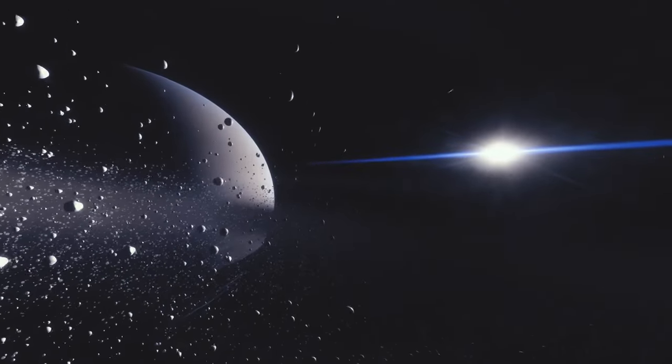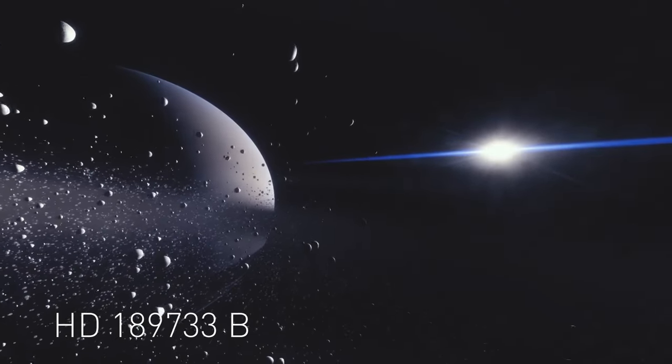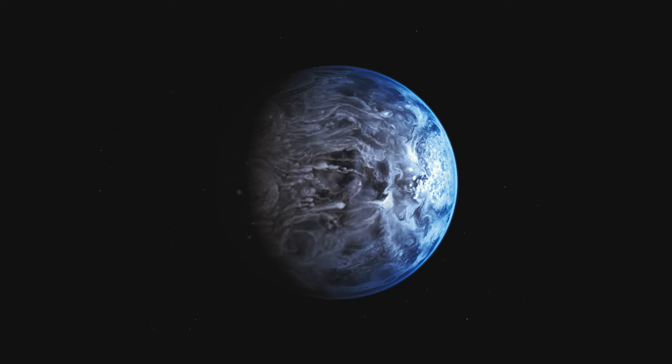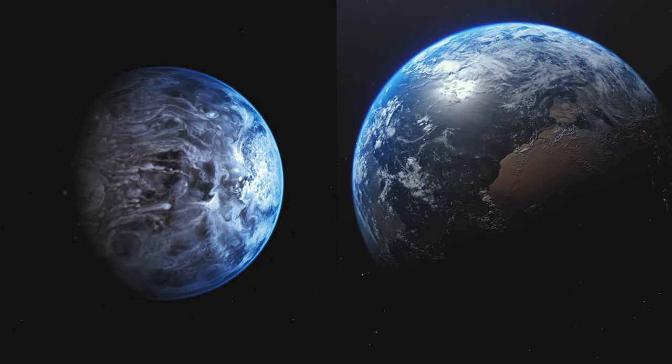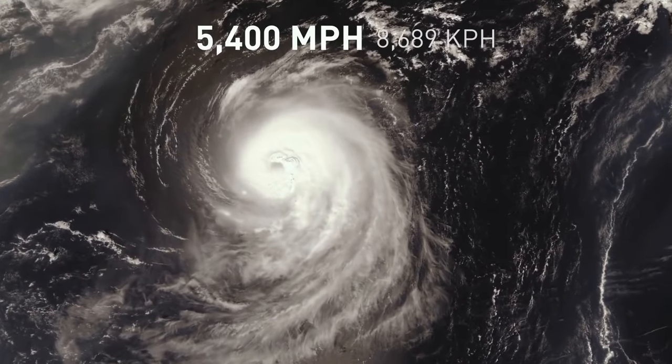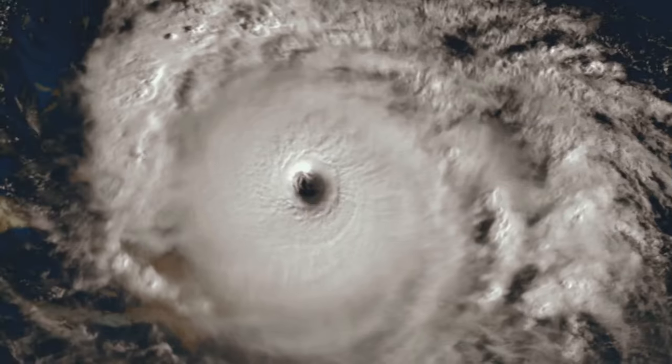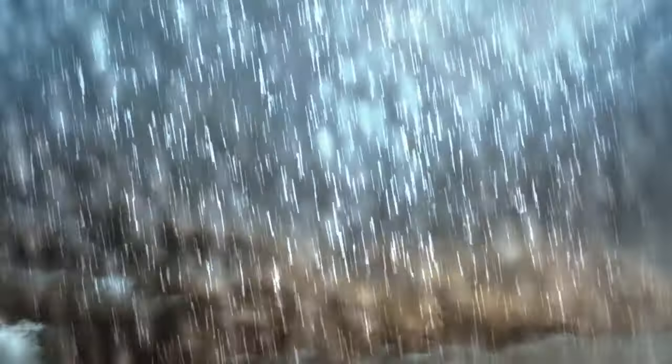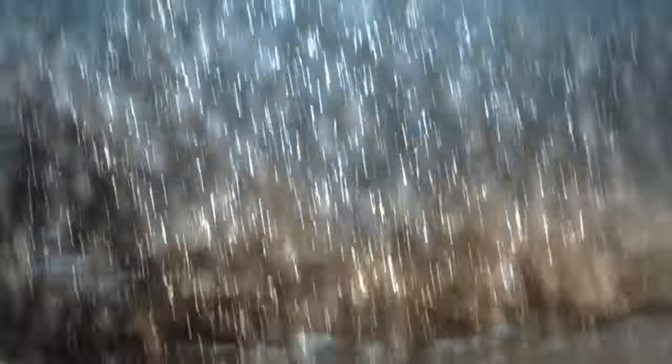Bright blue exoplanet HD 189733b looks peaceful and eerily familiar. Doesn't it resemble Earth? But this appearance conceals the planet's terrifying nature. There, the winds blow at 5,400 miles per hour, seven times the speed of sound. But that's not the worst. It rains glass, sideways, in this scorching, hot world.